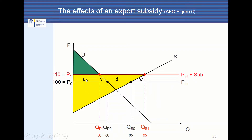We plug in some letters here where the letters symbolize different areas. The areas V, D, and W represent government spending. In the scenario with an export subsidy, 45 units are exported and the subsidy per unit equals 10. So the blue area symbolizes the export subsidy the Chinese government is paying to domestic producers — areas V, D, and W represent government spending.